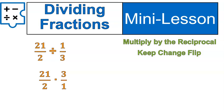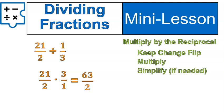So let's go ahead and actually multiply. When you multiply fractions, you're going across. I like to say multiplying is the most straightforward thing you can do with fractions because you literally go straightforward. 21 times 3 is 63. 2 times 1 is 2. That's it.